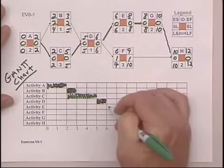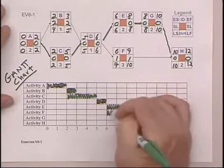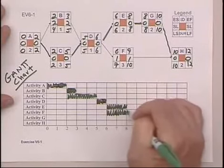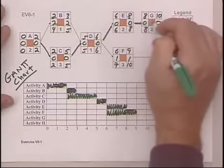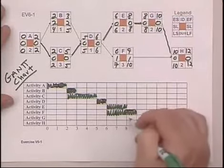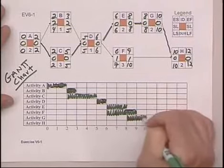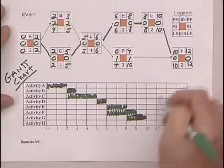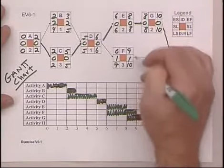And then as soon as E's done, G can start, which is the eighth period. That takes two days. And then finally H can start when both G and F are completed, and that's not until the end of the tenth day.